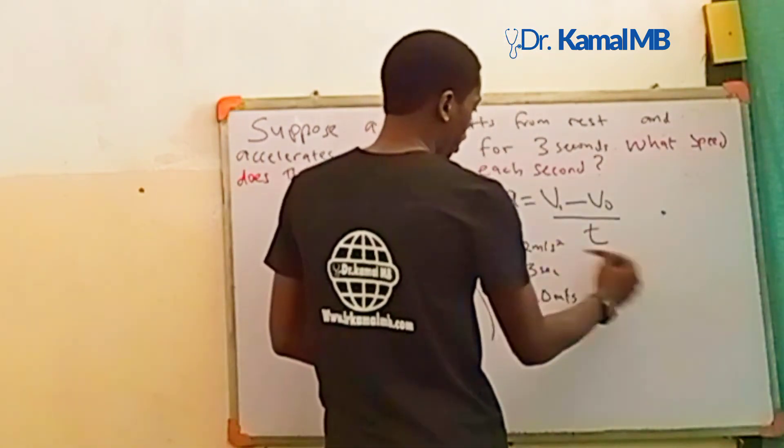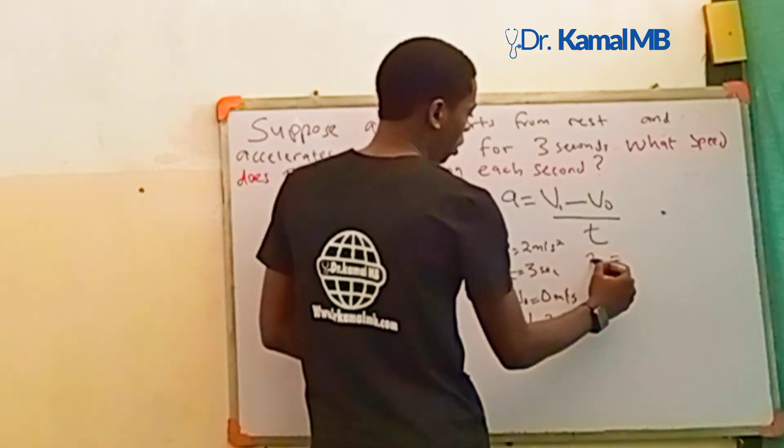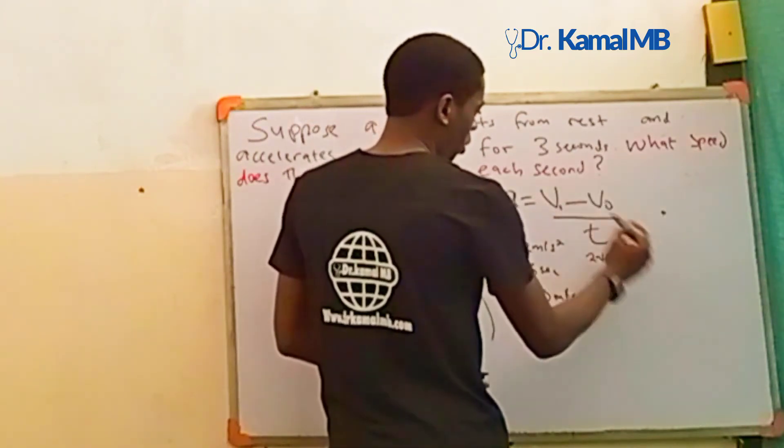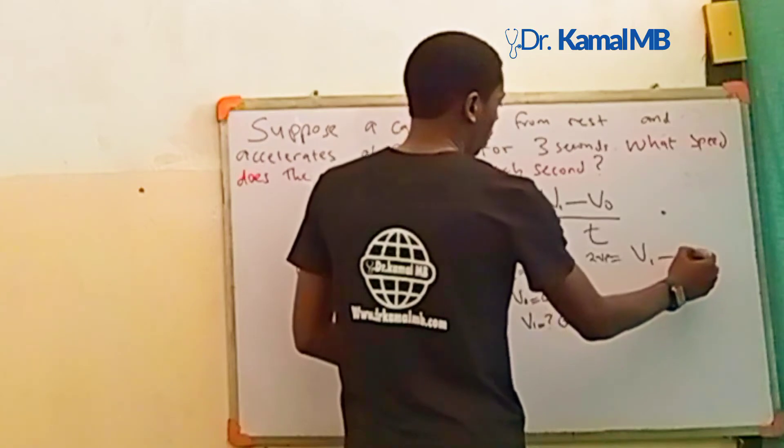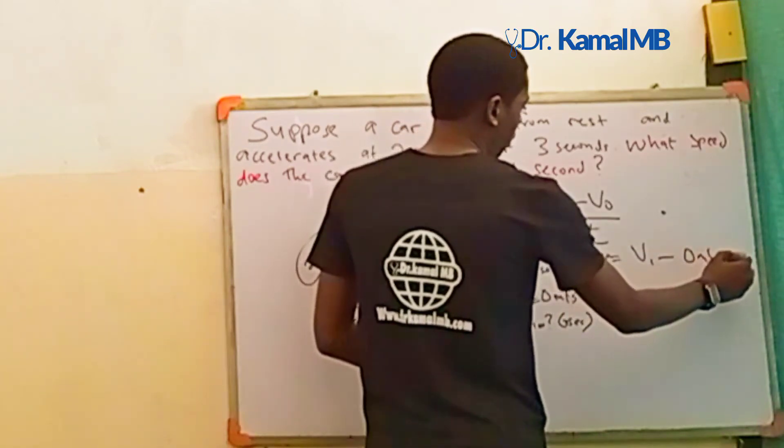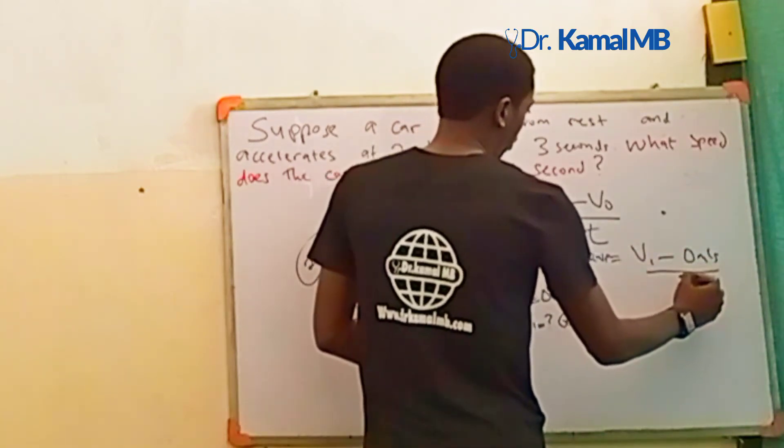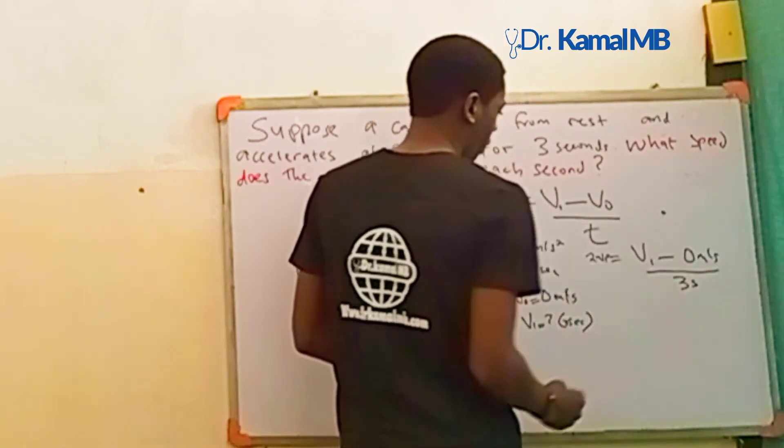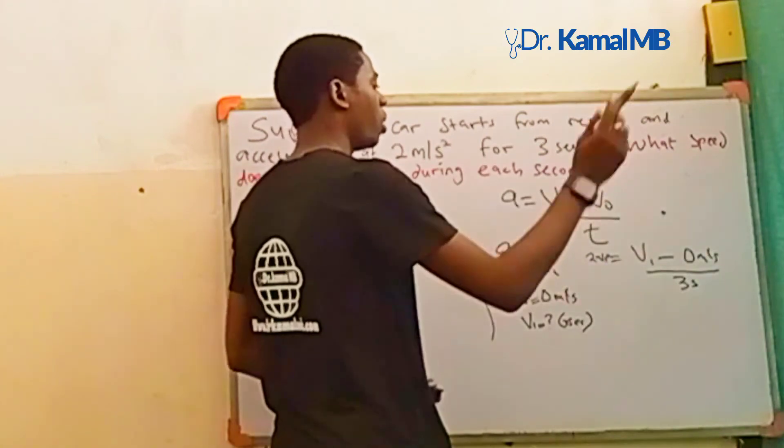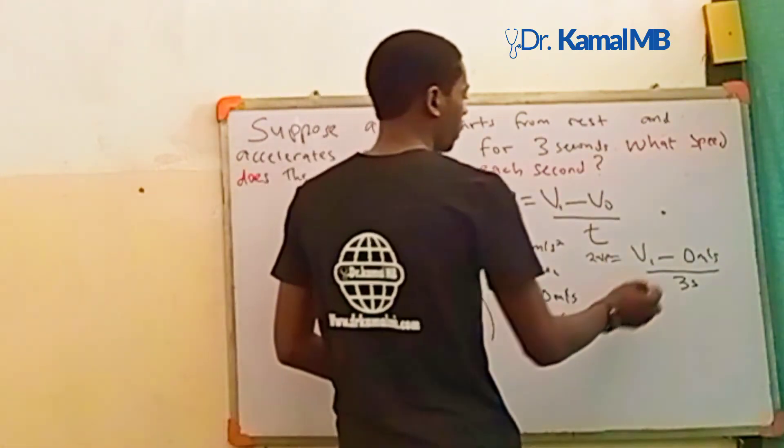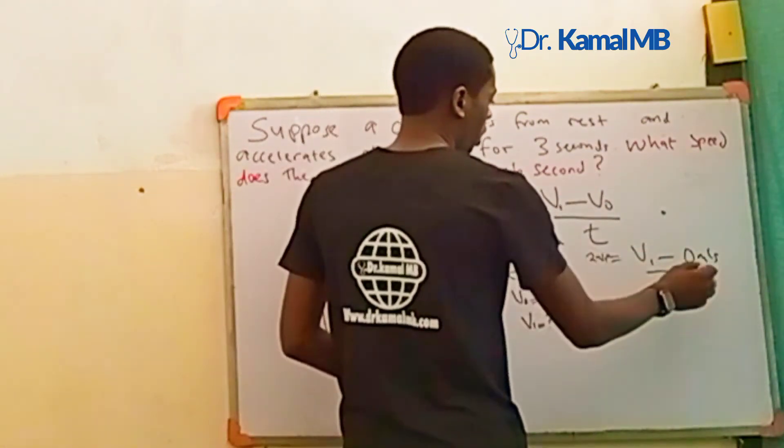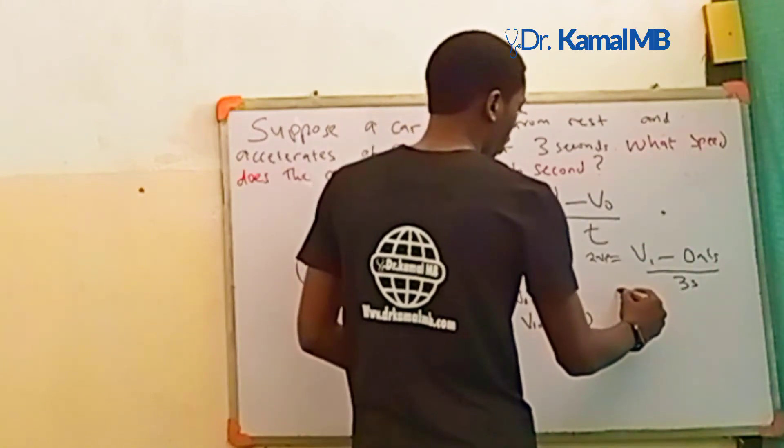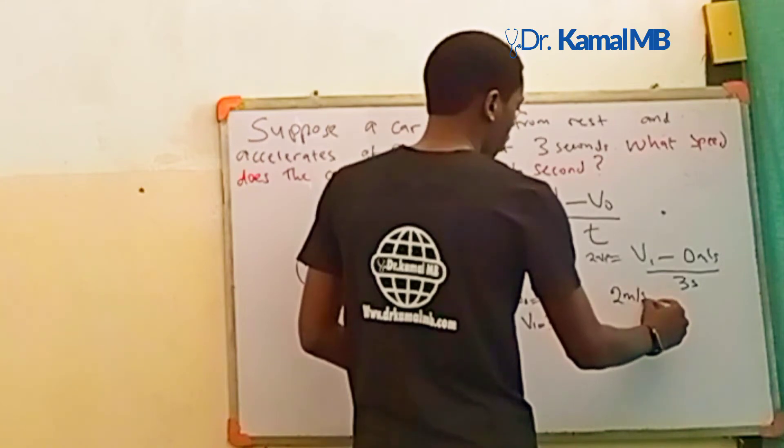The acceleration is 2 meters per second squared. Using the formula, acceleration equals V1 minus V0 over time. We can solve for V1 using cross multiplication.